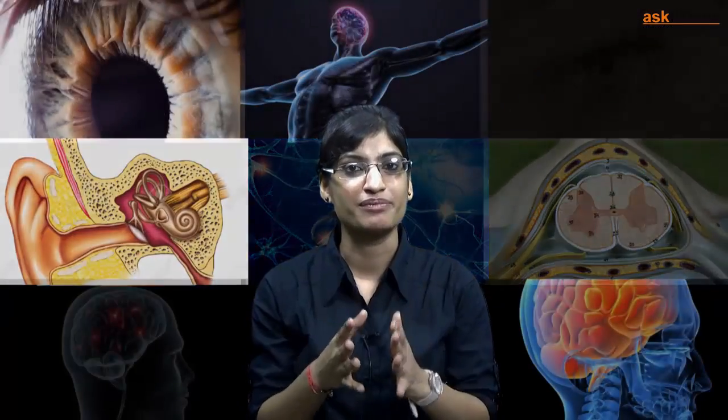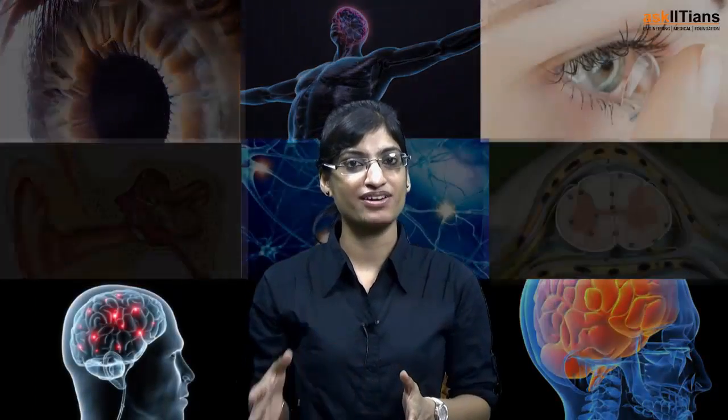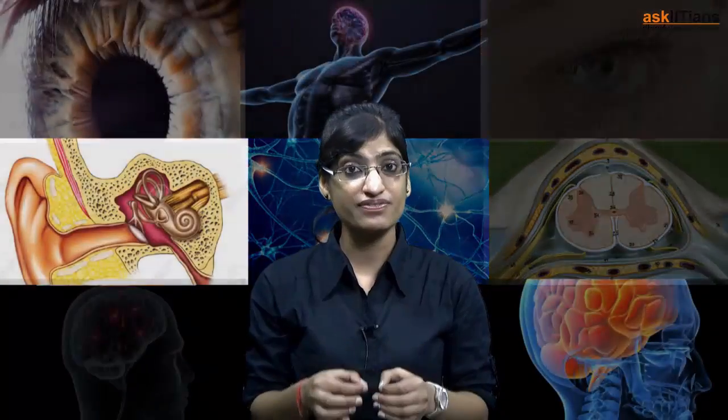Welcome back, students. In this part we are going to study about the nervous system. The nervous system is of two types: central nervous system and peripheral nervous system. Here we are specifically going to learn about the central nervous system. So take a look.